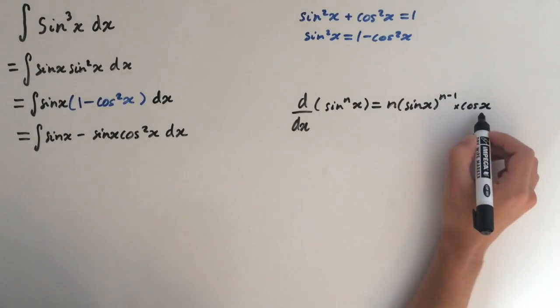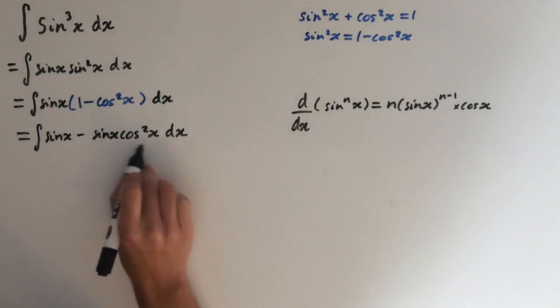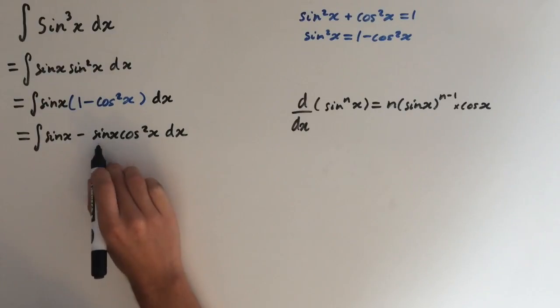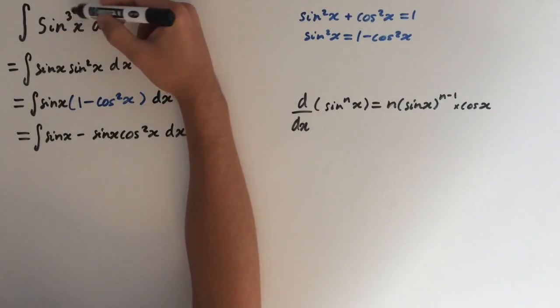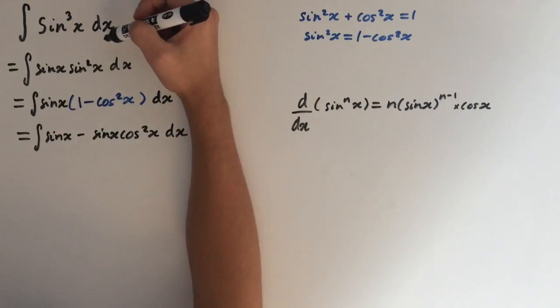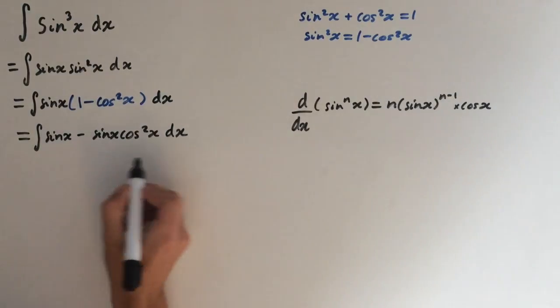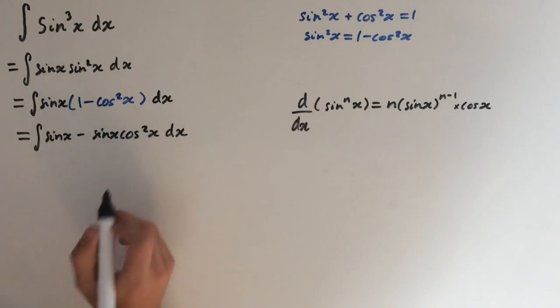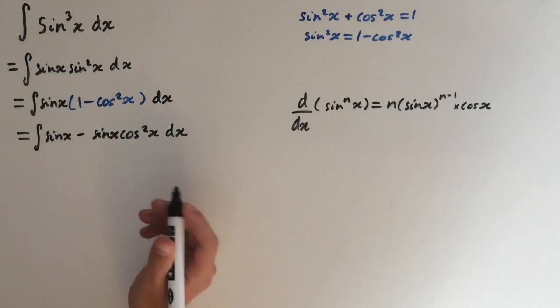Just like here we can now integrate this function because we've got the derivative cosine next to it which is sine. But here we can't integrate this on its own because it doesn't have its derivative next to it. So now we can integrate this. You can do it by inspection but I'm going to